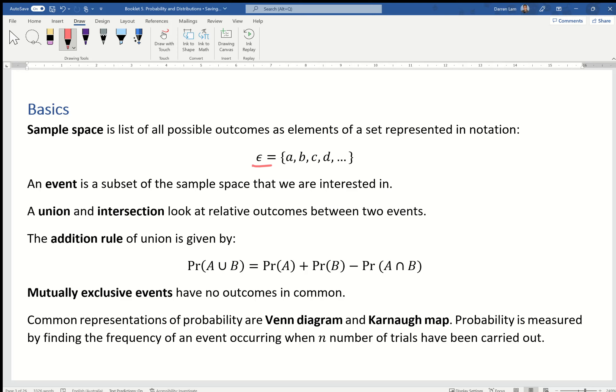It's epsilon equals, and then we use the curly brackets and list each of the possibilities out, comma separating.